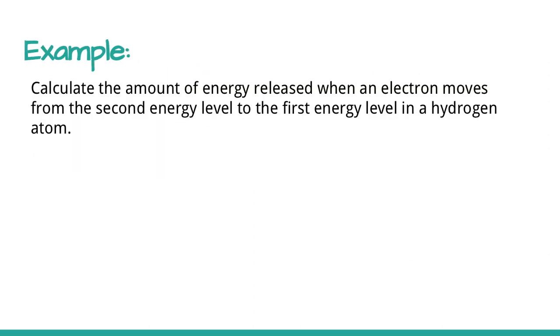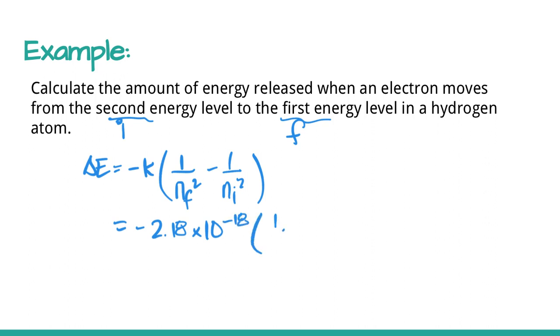Looking at an example, we're asked to calculate the amount of energy released when an electron moves from the second to the first. I like to take that equation and take the negative k out because you have negative k for both values, which makes the calculation easier. We get negative k times 1 over nf squared minus 1 over ni squared. Plugging in our values, we got negative 2.18 times 10 to the negative 18, times 1 over 1 squared minus 1 over 2 squared.